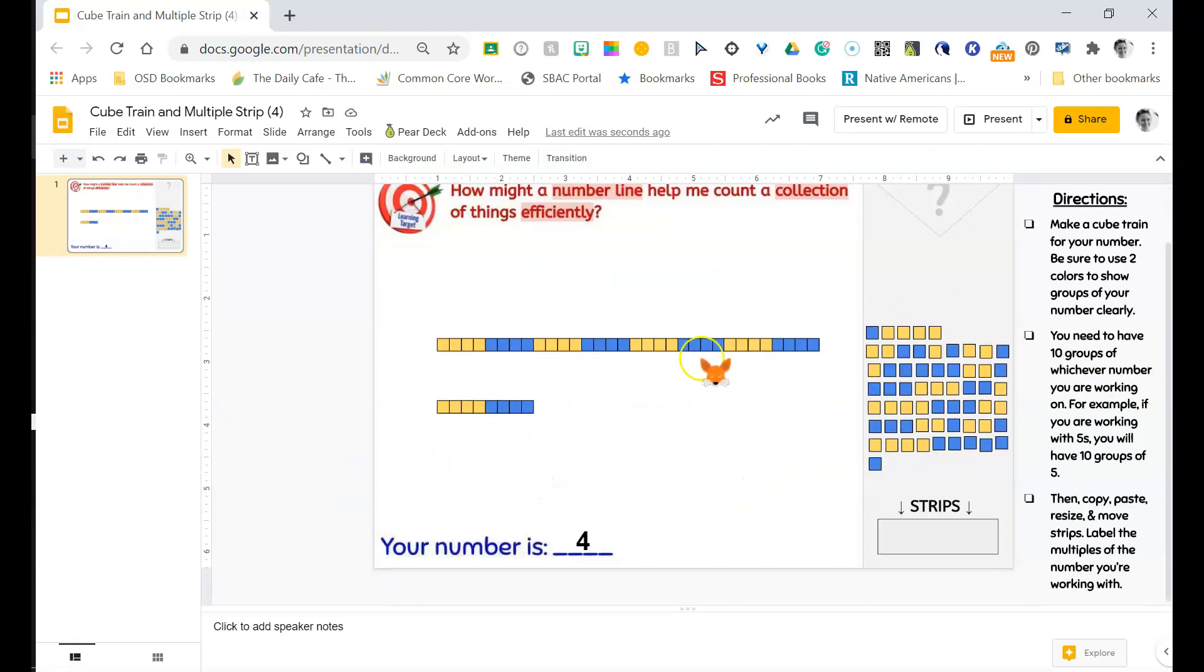I have made my train of cubes. I have one, two, three, four, five, six, seven, eight, nine, ten groups of one, two, three, four, in two different colors.